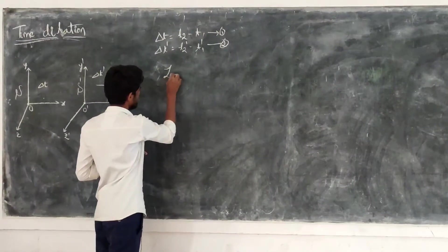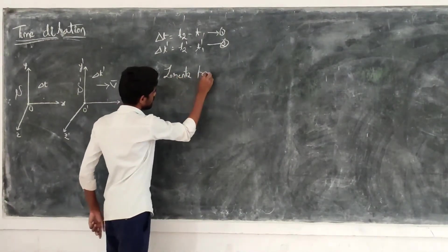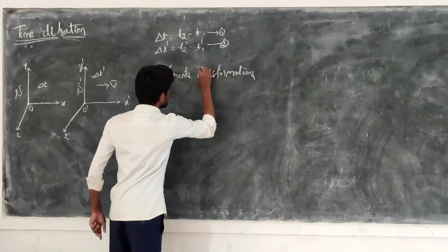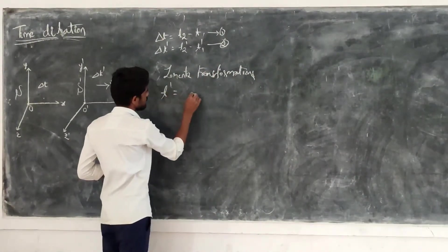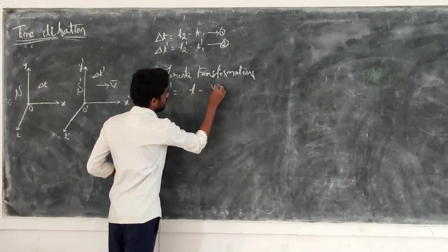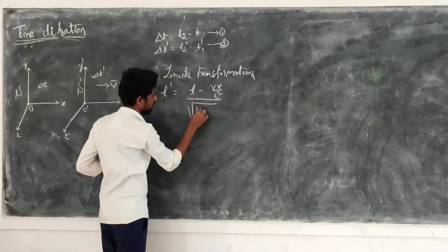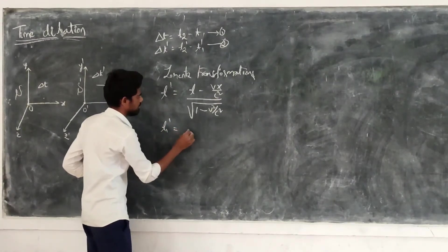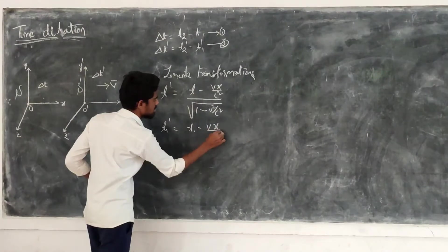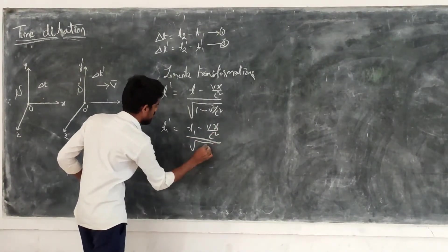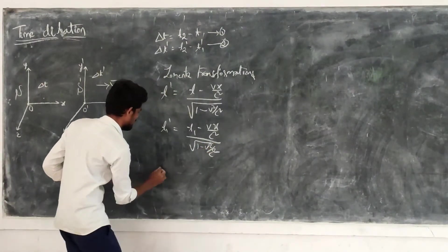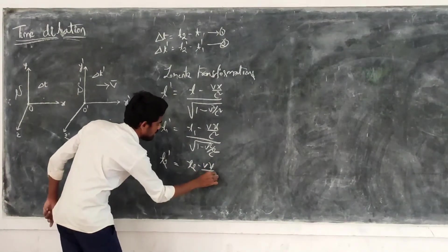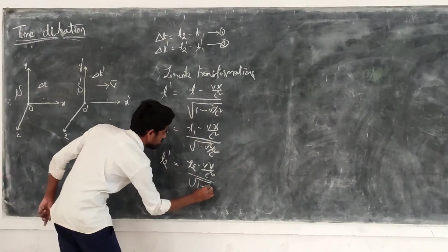From the Lorentz transformations, T' equals T minus Vx over C squared, divided by the square root of 1 minus V squared over C squared. Similarly, T1' equals T1 minus Vx over C squared, divided by the square root of 1 minus V squared over C squared. And T2' equals T2 minus Vx over C squared, divided by the square root of 1 minus V squared over C squared.